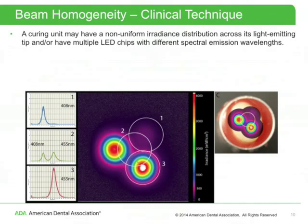A curing unit may have a non-uniform irradiance distribution across its light-emitting tip and/or have multiple LED chips with different spectral emission wavelengths. This close-up of the two-dimensional irradiance distribution image at 2 mm from the light-emitting tip shows circles 1, 2, and 3 corresponding to the approximate position of the 3.9 mm irradiance probe when spectral emission curves were generated. Circle 3 represents the curing unit positioned with the high irradiance region over the probe, showing a single peak at 455 nanometers from a blue LED. Circle 1 corresponds to positioning where the 455 nanometer peak mostly disappears, while the 408 nanometer peak from a violet LED becomes larger.